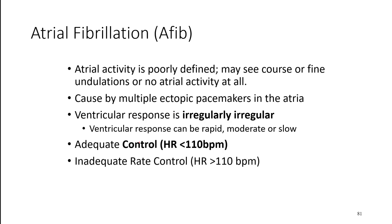We classify AFib by control because we give patients a slightly higher ceiling given the irregularities — in terms of what an acceptable heart rate is. Anyone below 110 we say has adequate control; it's usually our goal with medication to get the heart rate a little below that. The higher the heart beats, the more it has to work. If it goes above 110, we'll call that inadequate control. This is more or less referring to heart rates at rest.